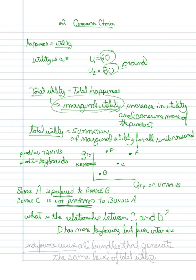You'll notice that, if we were to compare bundles C and D, that D has more keyboards, but fewer vitamins. So, what's the relationship? There has to be some relationship between those two bundles. What we need is an indifference curve. What an indifference curve does, is it traces out all the bundles that generate the same level of total utility.